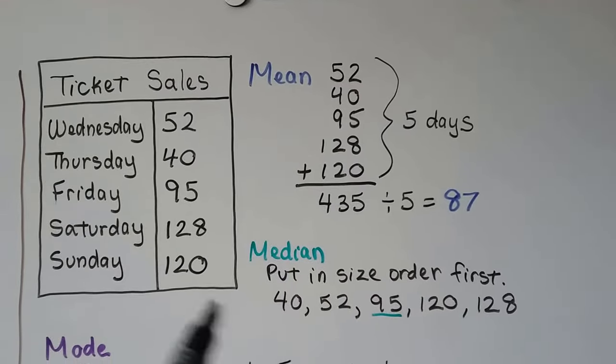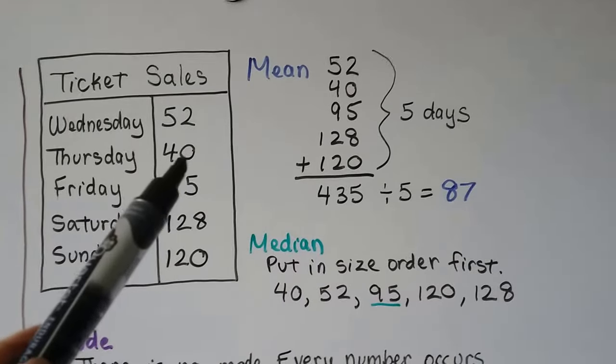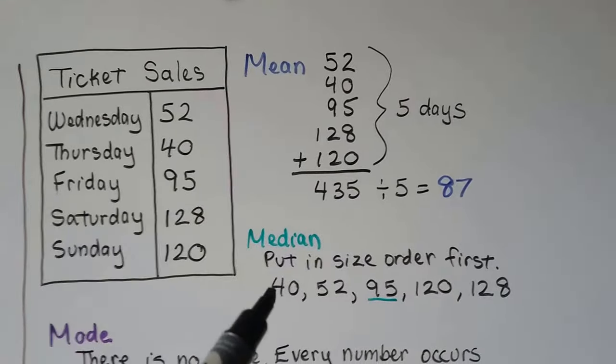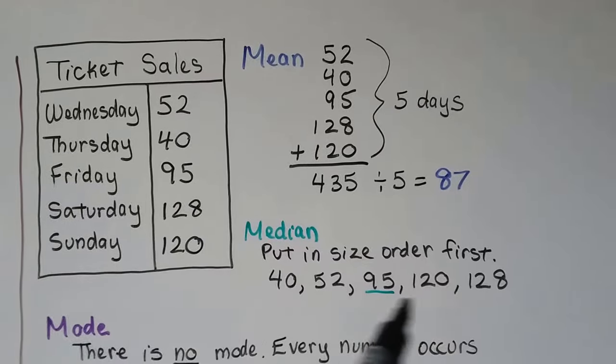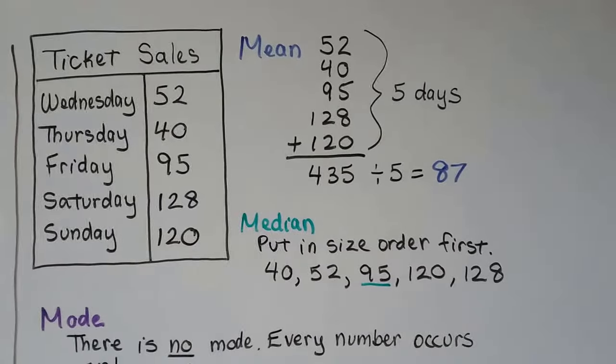To get the median, we first put it in size order. So we have a 40 here. Well, that's the smallest number. We put it first. We put them all in size order and we pick the middle number. So the median is 95.